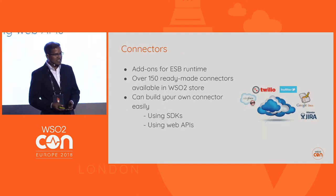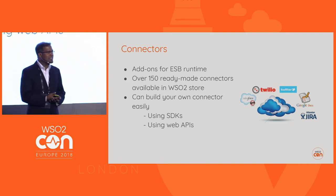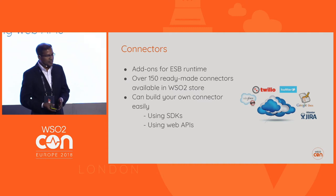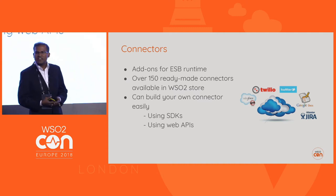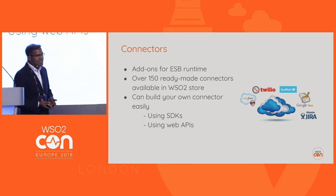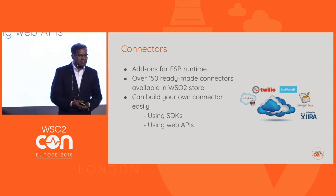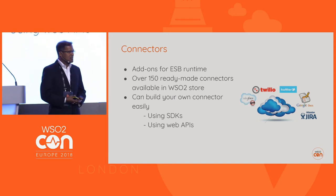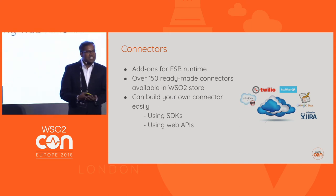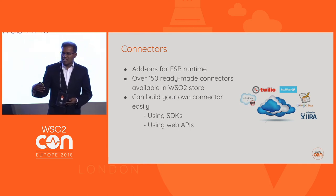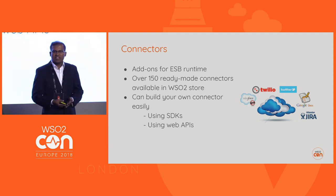Specifically, a connector is a component that allows us to use third-party systems' functionality and data within our ESB message flow. We have implemented around 150 ready-made connectors available for download within WSO2. These connectors provide the ability to connect to standard web APIs like Twitter, Salesforce, Jira, etc., and some connectors provide functionality to connect to on-premise systems. In case the available connectors do not provide the needed functionality, we can implement a connector using the SDK provided by the system, or if there is a web API, we can use that to implement a connector.